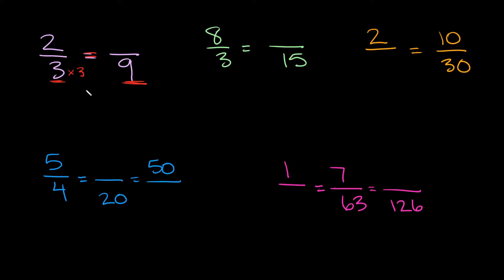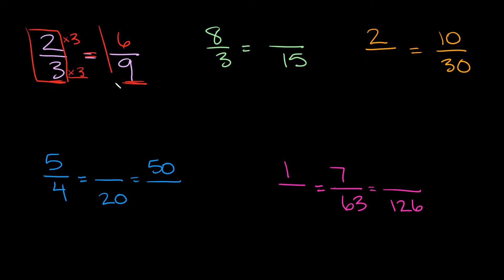With equivalent fractions, when you multiply by something on the bottom you have to multiply by the same thing on top. So if we're going to multiply by three down here we also have to multiply by three up here. So what's two times three? That's equal to six. So two-thirds is equivalent to six over nine.